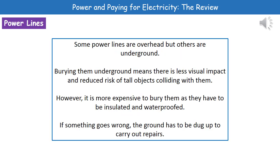When thinking about power lines that run across the country, some go overhead between large pylons, and others are buried underground. There are advantages and disadvantages of both. For underground cables, there's no visual impact — you don't see big pylons everywhere — and we also reduce the risk of anything colliding with them, which is significant when you're talking about 400,000 volts.